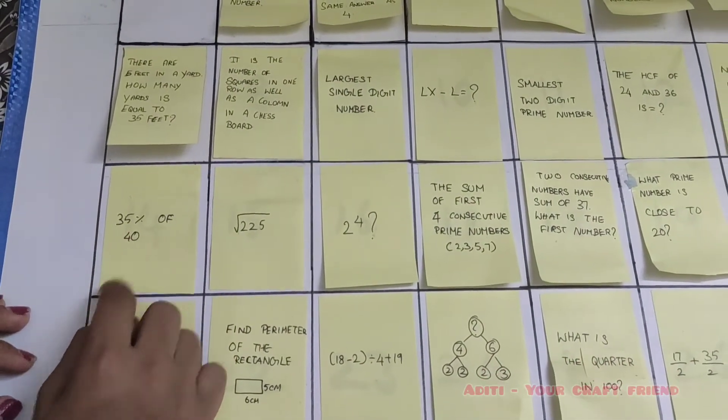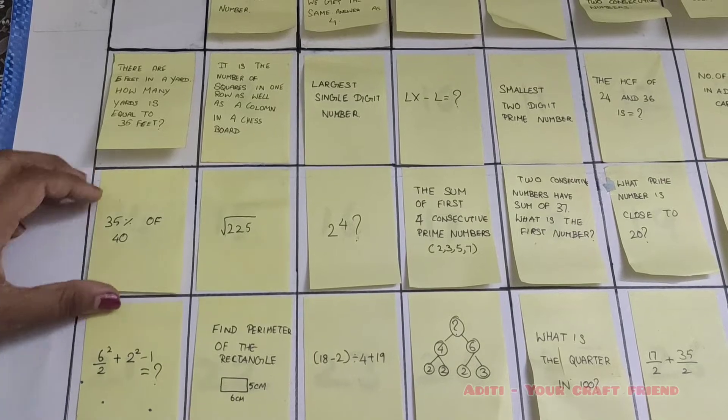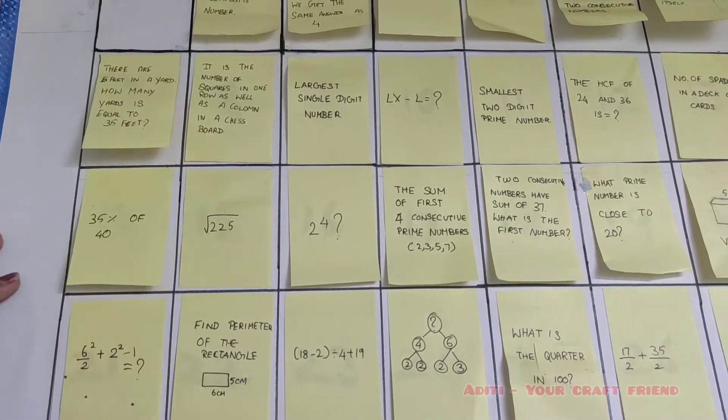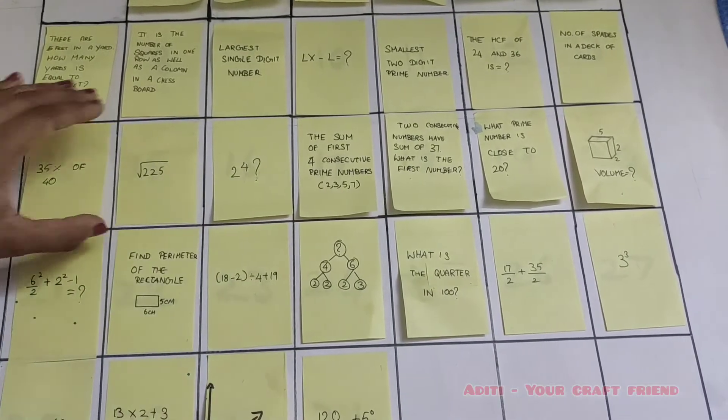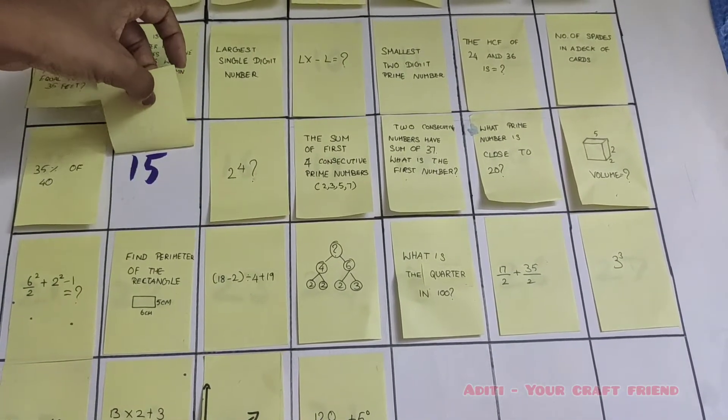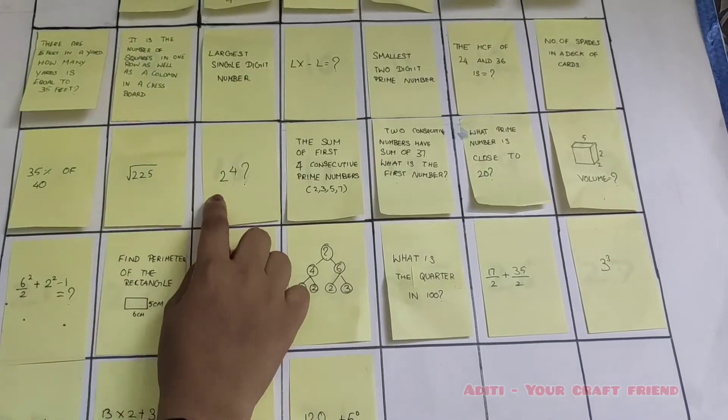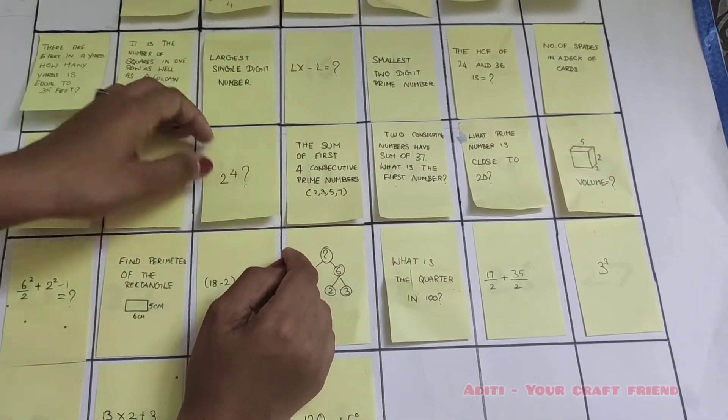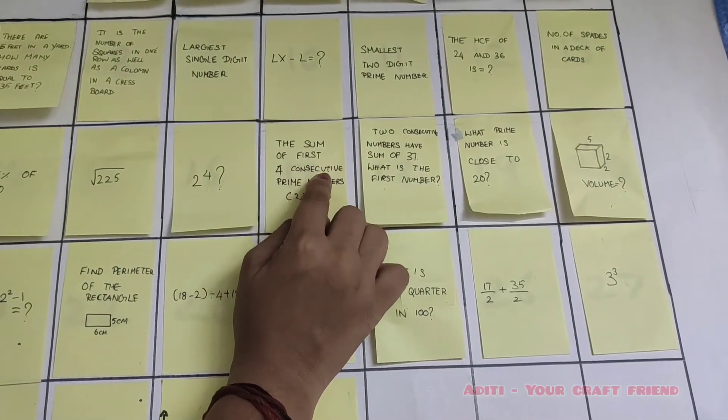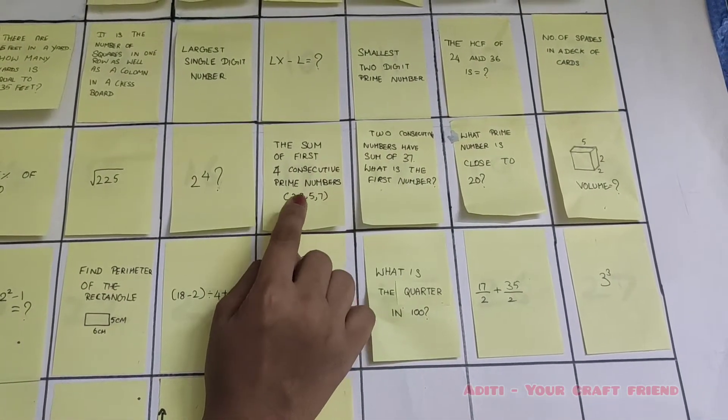35 percent of 40. What is the answer? Yes, it's 14. Square root of 225. What is the answer? Yes, 15. 2 power 4. What is the answer? 16.